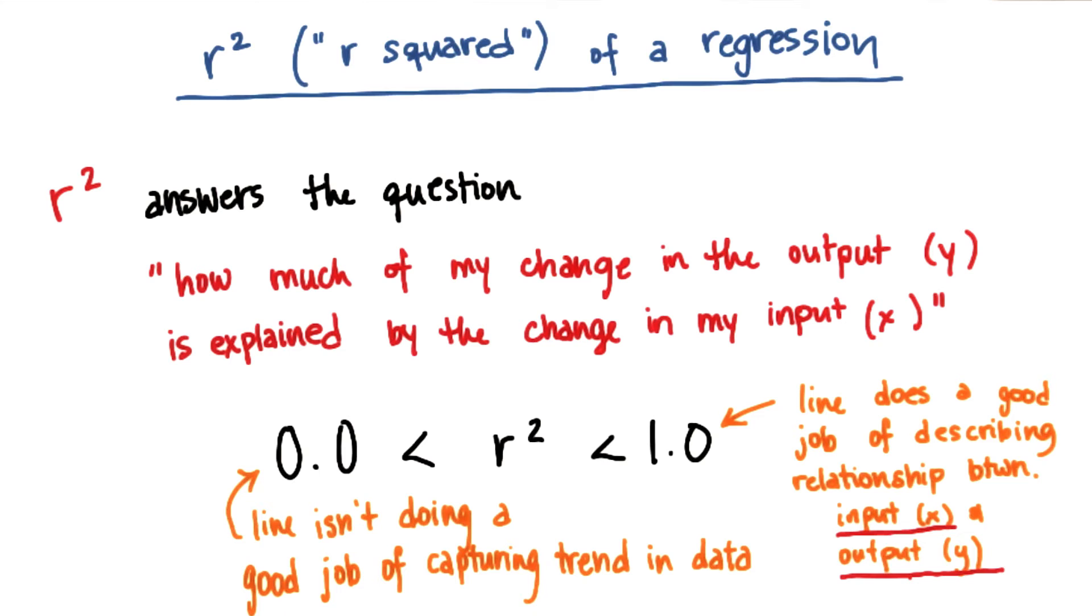Remember, this is the whole point of performing a regression: to come up with a mathematical formula that describes this relationship. So if your r-squared is close to 1, it basically means your fit is doing a good job. The good thing about r-squared is that it's independent of the number of training points.